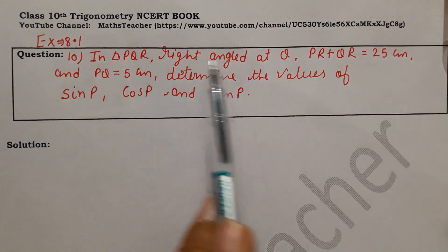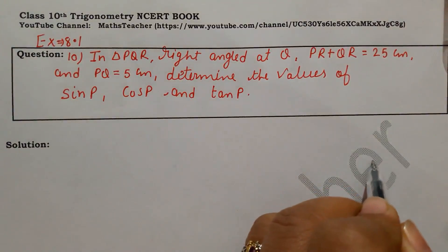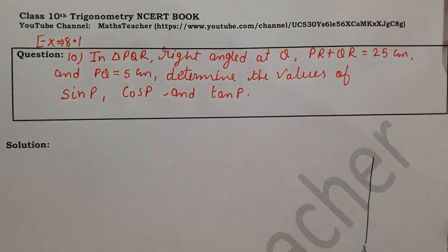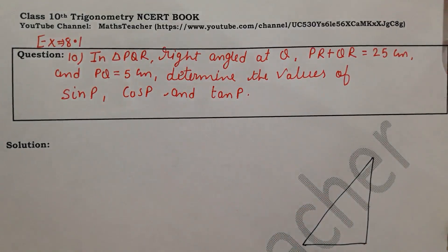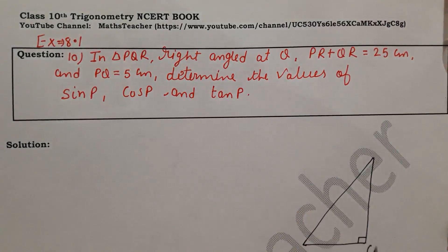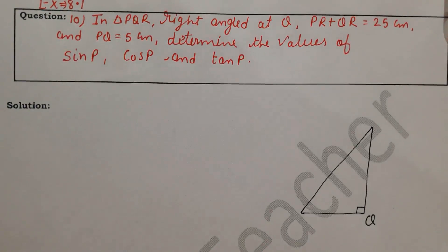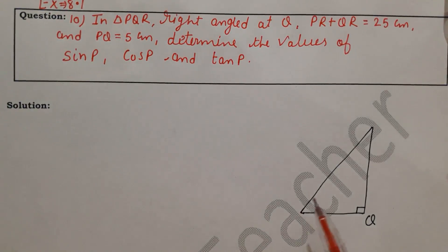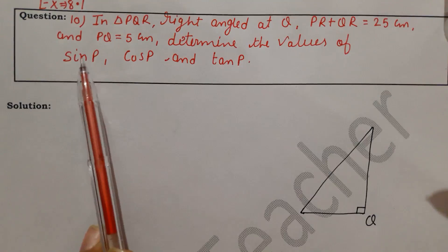In this question we have a right angle triangle with angle Q equal to 90 degrees. So first let's draw a right angle triangle. Angle Q is 90 degrees.